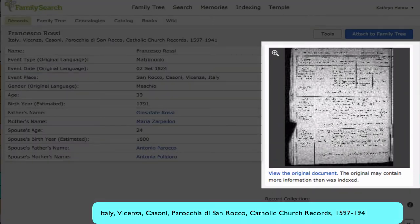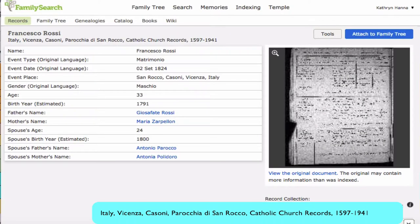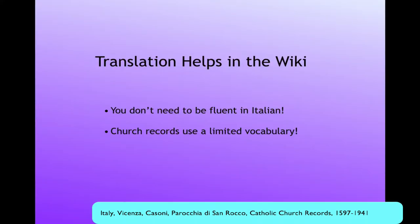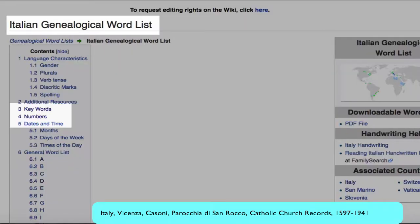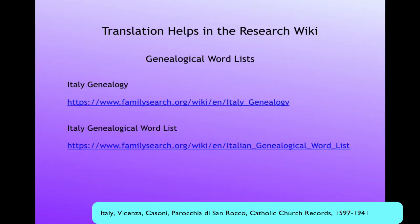This link will take you to the original record, which you always want to look at because it will provide much more information. With the help of the wiki, it's very easy to translate Italian church records — you don't need to be fluent in Italian. This Italian genealogical word list will have all the words that you need to know. The links you need will be posted in the notes below this video.